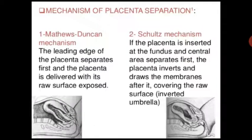The mechanism of placenta separation. Two types of mechanisms are the Matthew Duncan method and the Schulze method. In the Matthew Duncan mechanism, the leading edges of the placenta separate first and the placenta is delivered with the raw surface exposed.